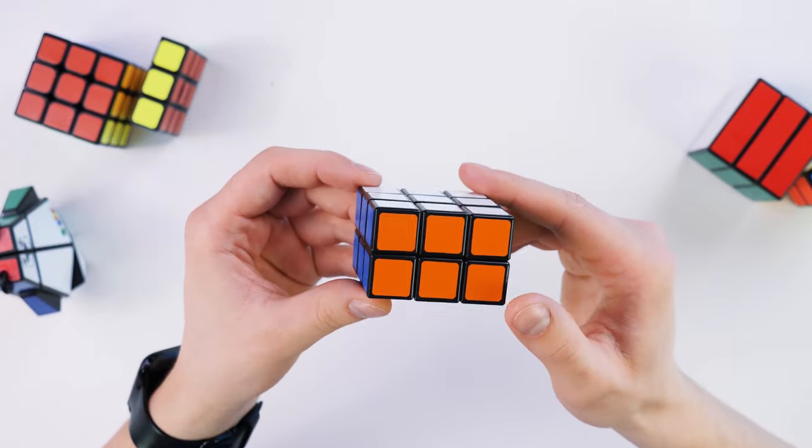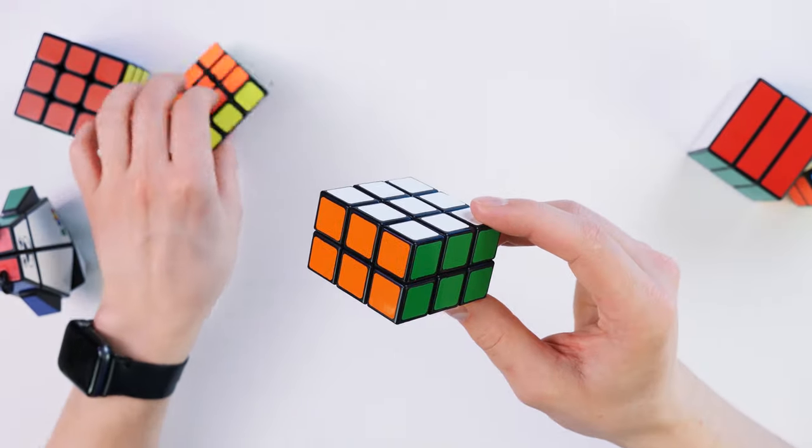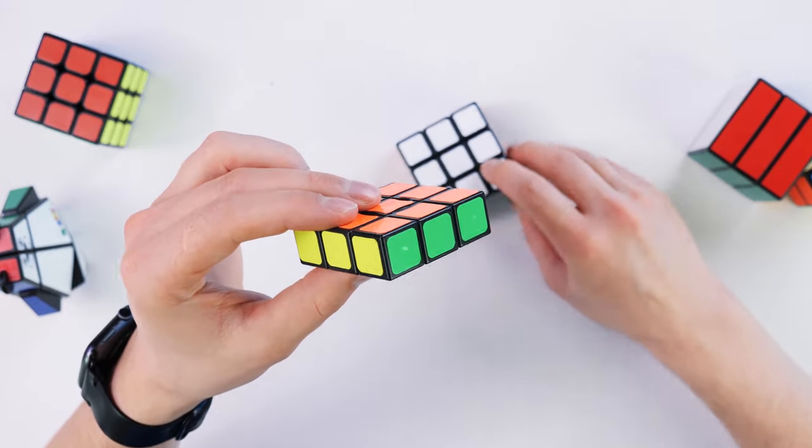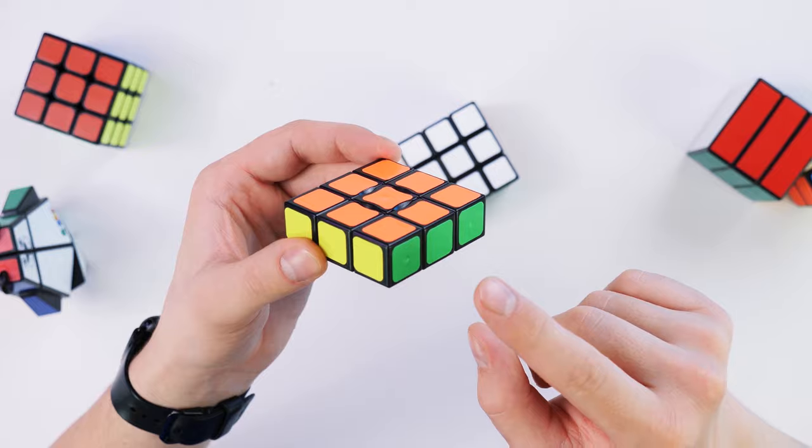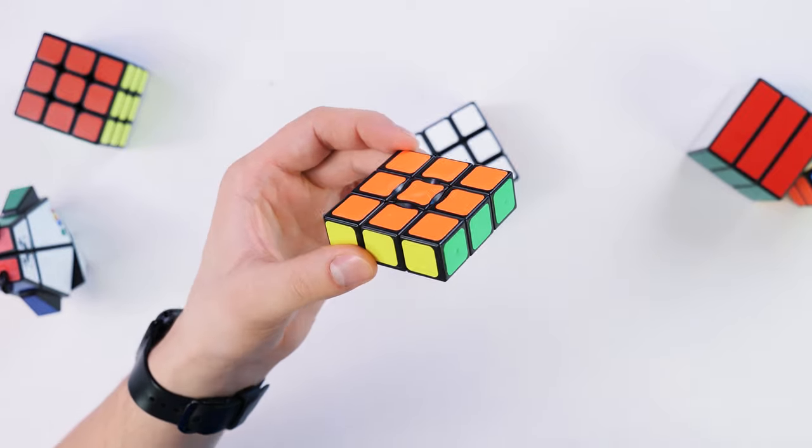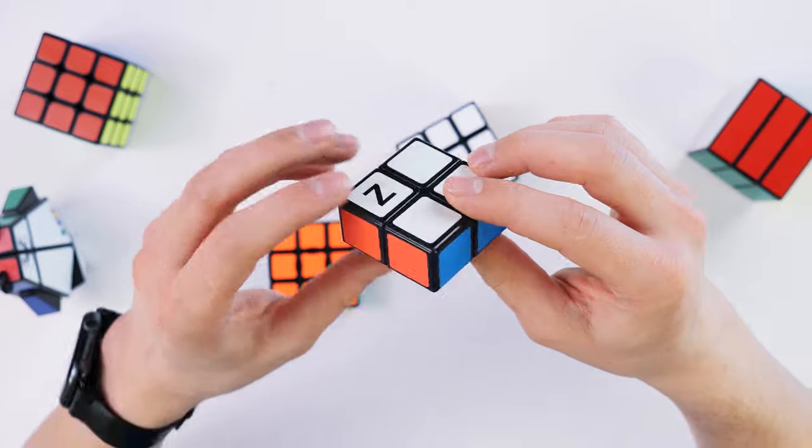I would call this Rubik's cube flat, but I can't do it, because there's already a flat Rubik's cube. Like this. And by the way, it is much more complicated than it seems at first glance.